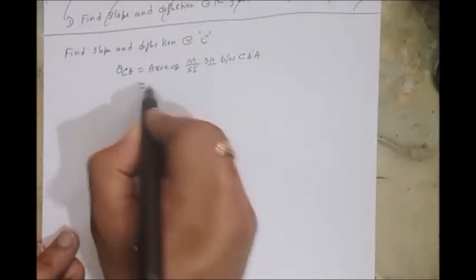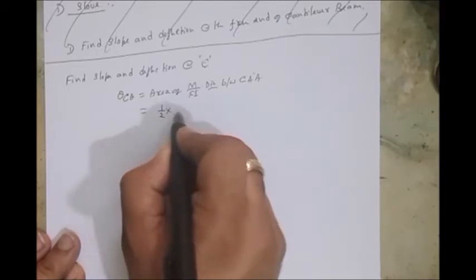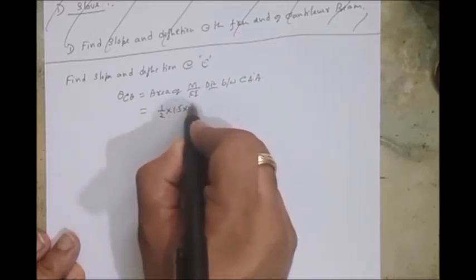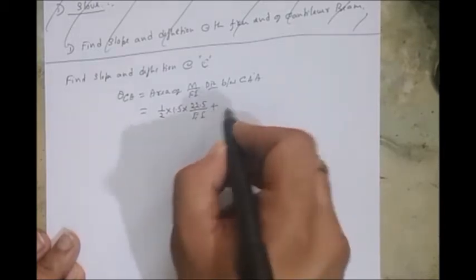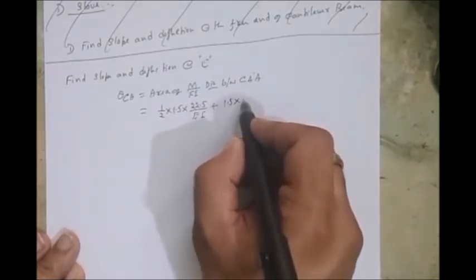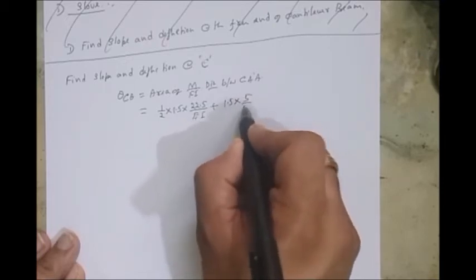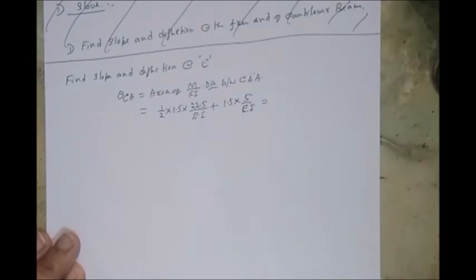The answer for this one, now it's easy. First region, half into base into height 22.5 by EI, plus second region is rectangular, so 1.5 into 5 by EI.